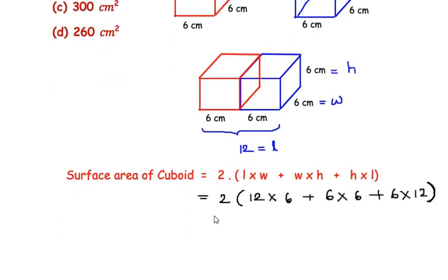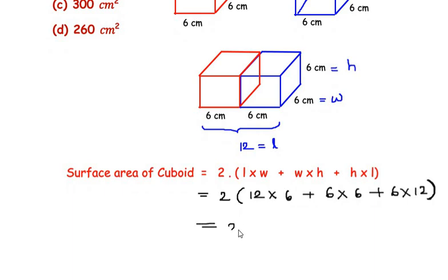Now let us further simplify this. We have 2 times (12 times 6 is 72, 6 times 6 is 36, and 6 times 12 is again 72).